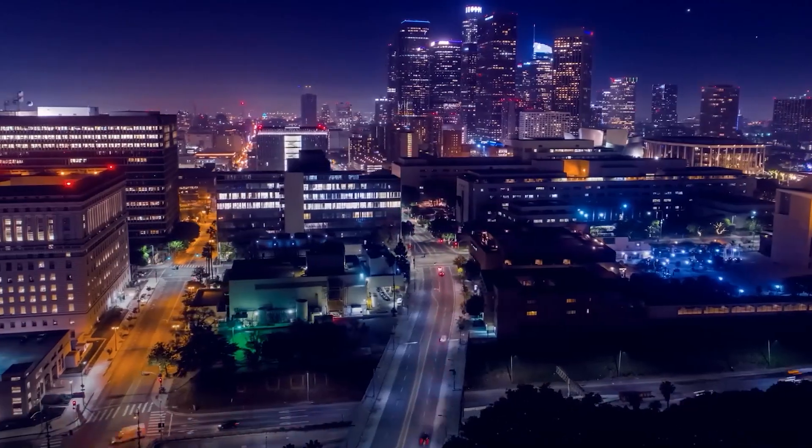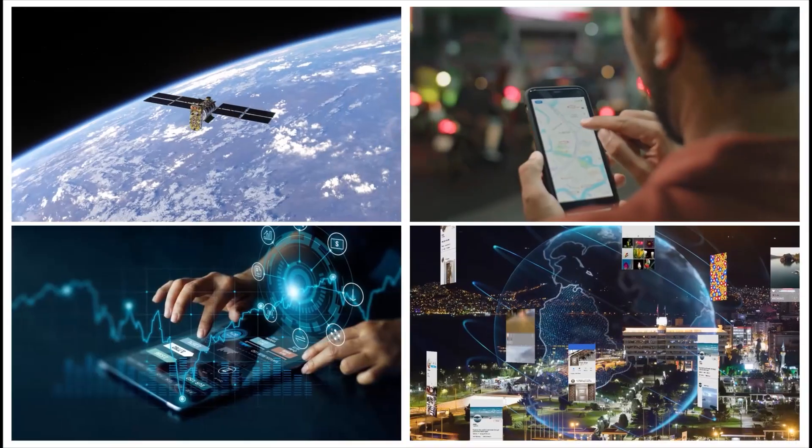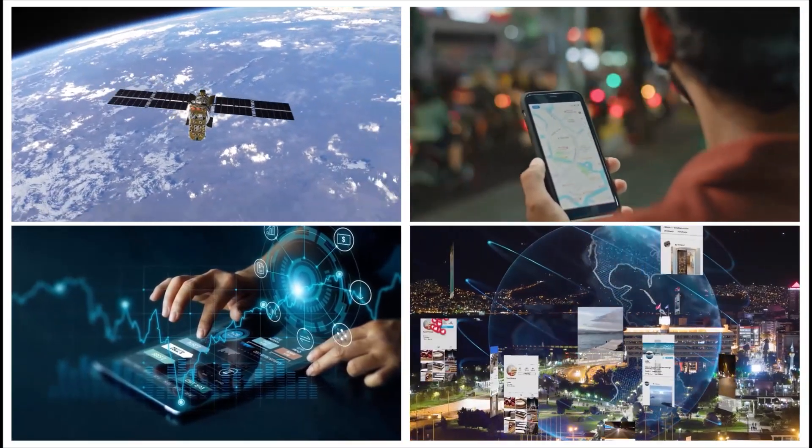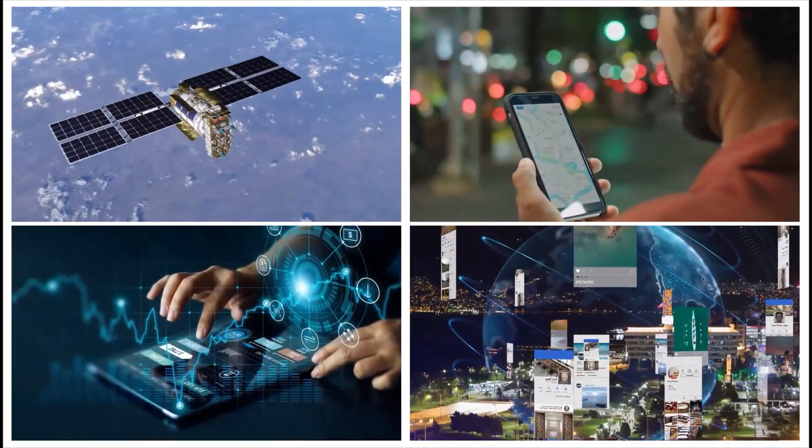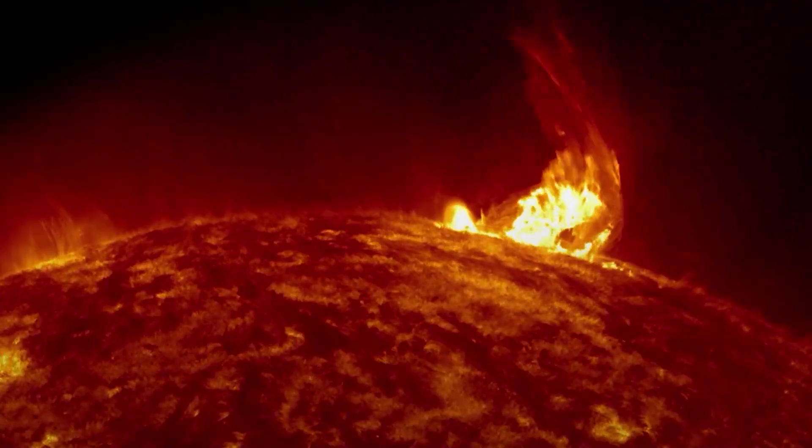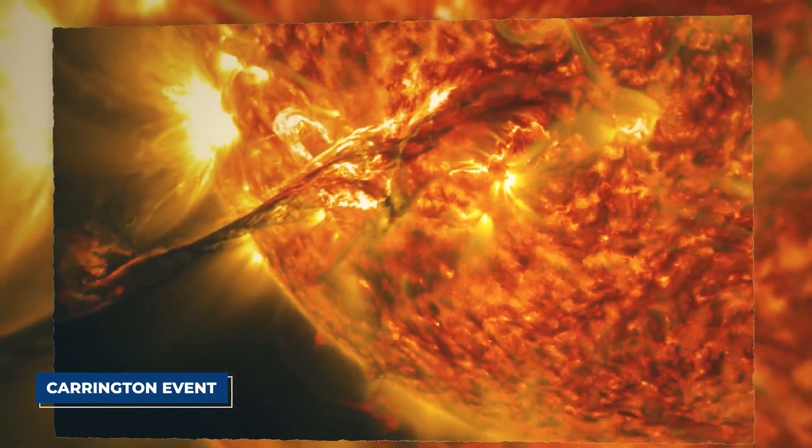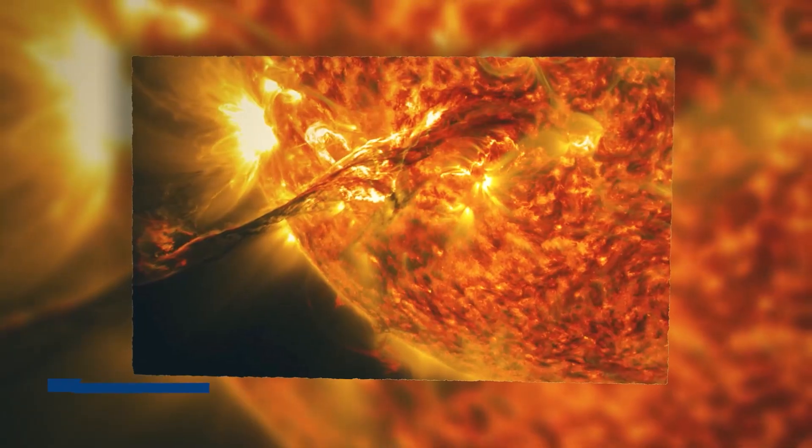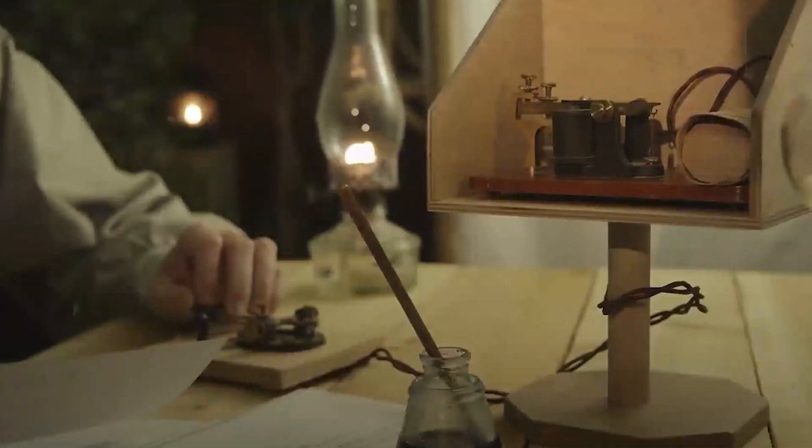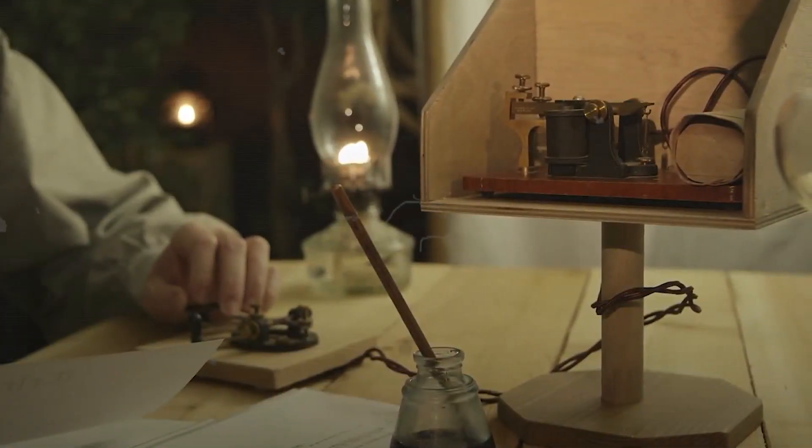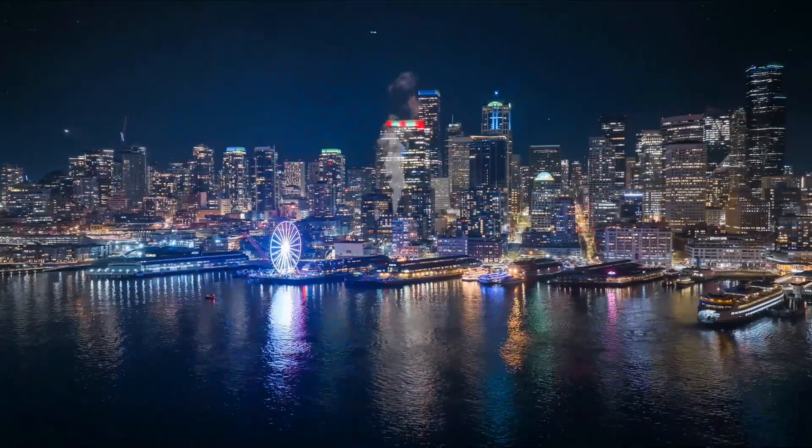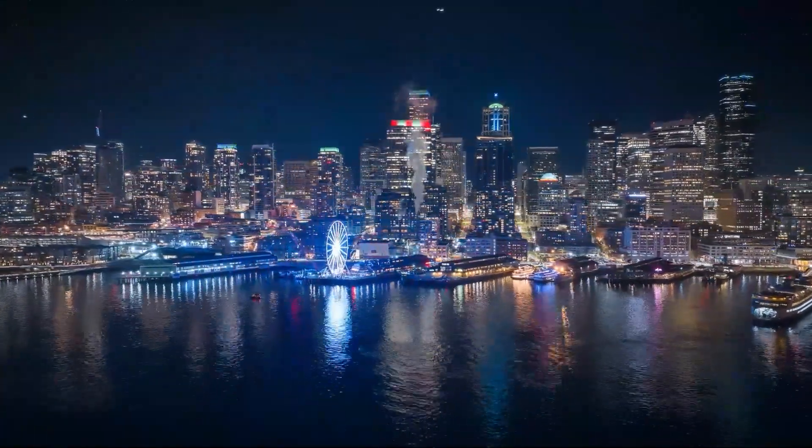Our entire digital world, from satellites to cell phones, banking systems and internet networks, would be at risk. This isn't science fiction. The Carrington event in 1859, a much smaller solar storm, caused telegraph systems to fail and even sparked fires. Imagine that level of disruption in our hyper-connected world today.